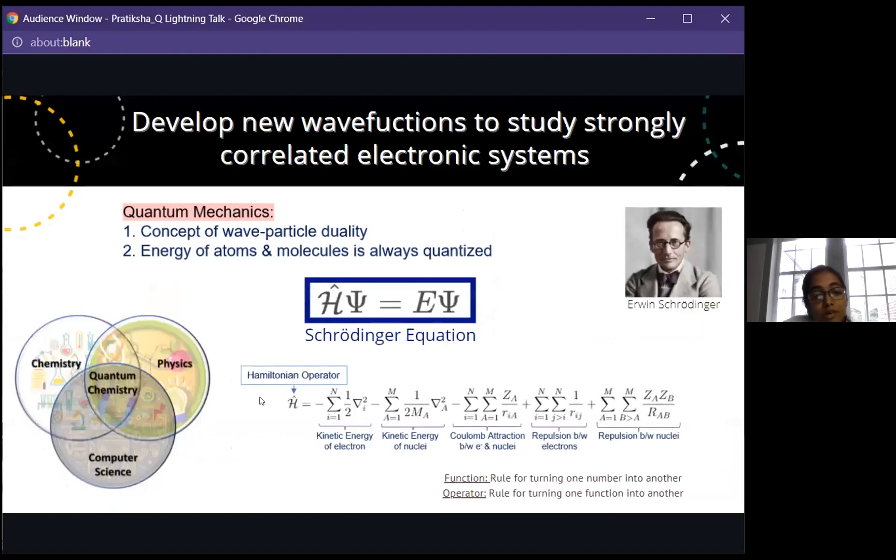The field of quantum chemistry actually works on the interface of chemistry and physics to develop the mathematical framework and it uses the knowledge from computer science to actually implement it through coding. There are two basic aspects of quantum mechanics which give rise to these quantum chemical methods. First is the concept of wave-particle duality, the notion that we can think of very small objects such as electrons as having the characteristics of waves and particles. The other aspect is that quantum mechanical models predict the energy of atoms and molecules are always quantized. That means they have only some specific amount of energy.